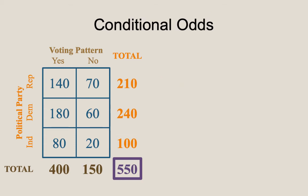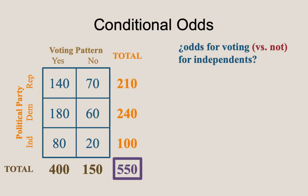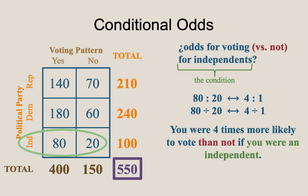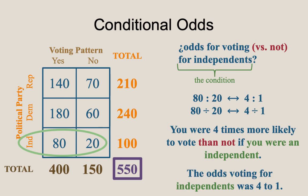We will now talk about conditional odds. We must be careful because the language can become a bit cumbersome. What are the odds for having voted for Independents? Focusing only on Independents, there were 80 that voted and 20 that didn't vote. So the odds are 4 to 1, written as 80 over 20, or 4 over 1, or just the number 4. The final conclusion is: you are 4 times more likely to vote than not if you are Independent, or in more common parlance, the odds of voting for Independents are 4 to 1.